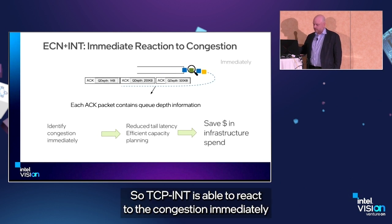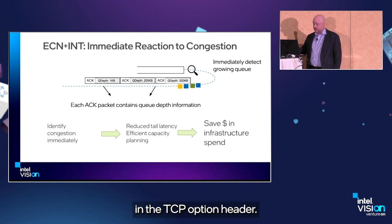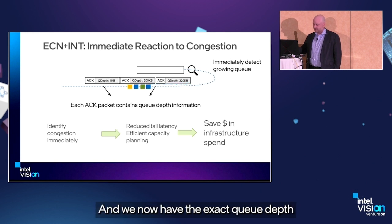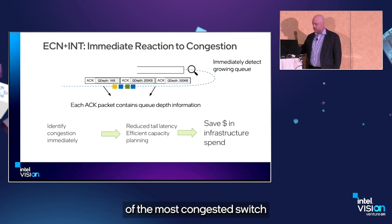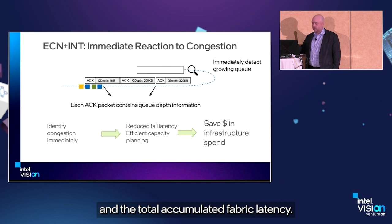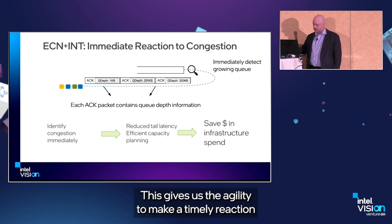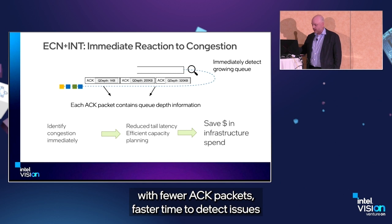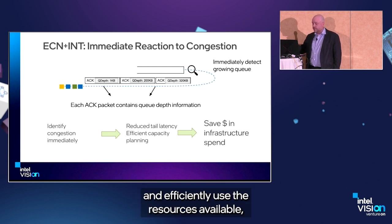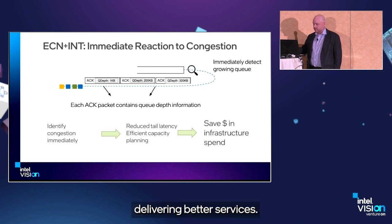TCP INT is able to react to congestion immediately in the TCP option header. We now have the exact queue depth of the most congested switch and the total accumulated fabric latency. This gives us the agility to make a timely reaction with fewer ACK packets, faster time to detect issues, and efficiently use the available resources.